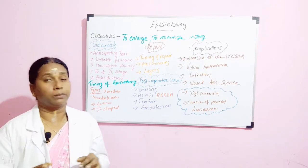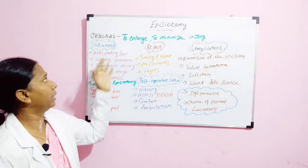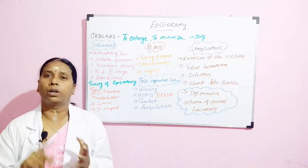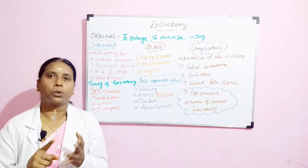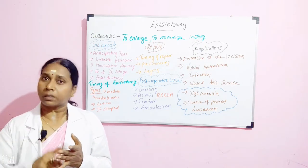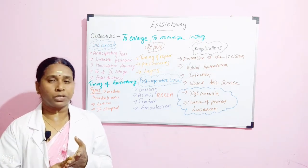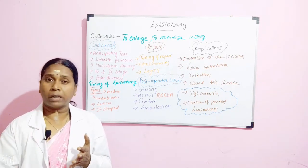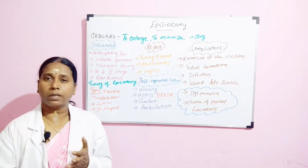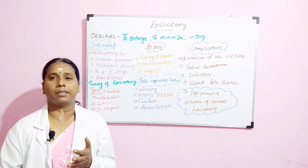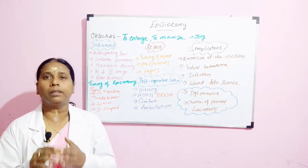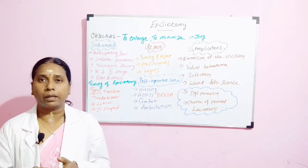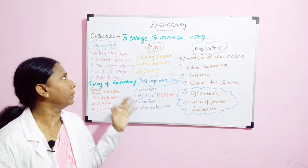The first indication is anticipating a tear — for example with a big baby, twin pregnancies, expected obstetrical emergencies, or instrumental delivery such as forceps or ventouse. In all these cases you would expect the perineal area to need more space, so you give an episiotomy.